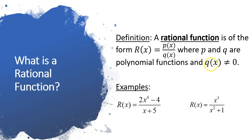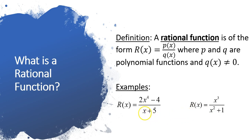Remember, you cannot divide by zero, which is why the bottom function, or what's in the denominator, cannot equal zero. I provide a few examples here, such as r of x equals 2x to the fourth minus 4 over x plus 5, and r of x equals x cubed over x squared plus 1. The only absolute necessary requirement to have a rational function is that the variable x must be in the denominator. So rational functions are fraction functions.